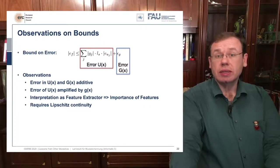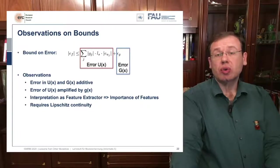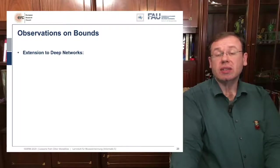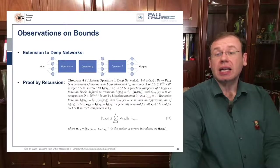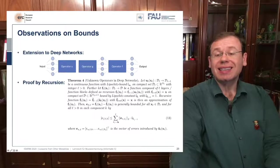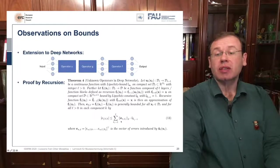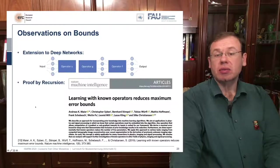Of course, this only applies to two-layer networks, but we can extend it to deep networks where all errors and respective Lipschitz constants again form a sum. If you know the function in a respective layer, the error of that layer cancels out, shrinking the upper bound. If you're interested in this proof by recursion, you can find it in IEEE Transactions on Machine Intelligence.